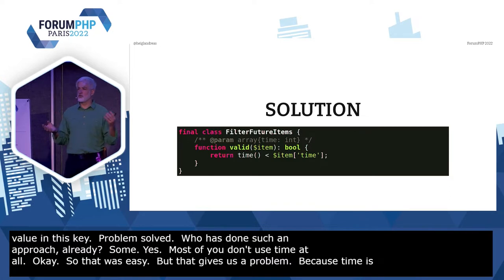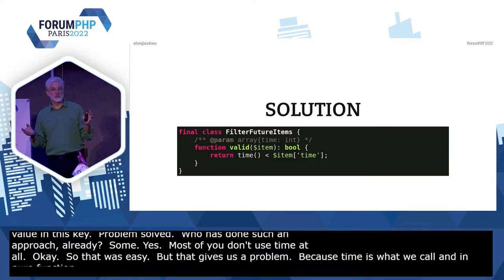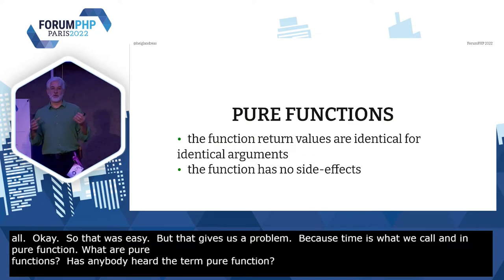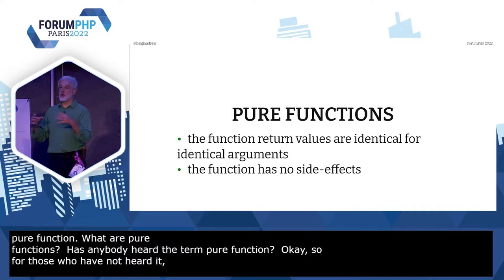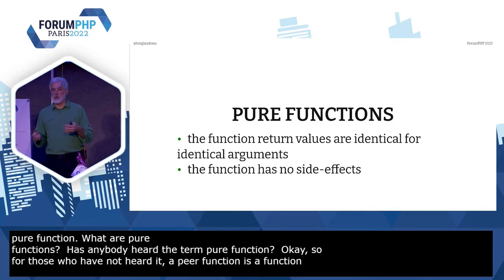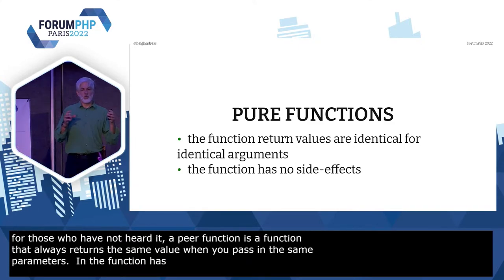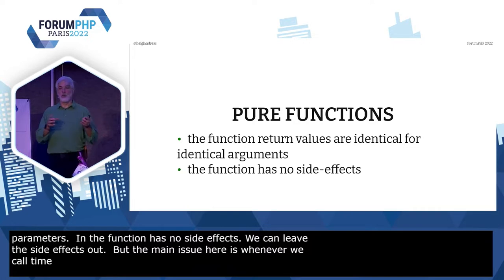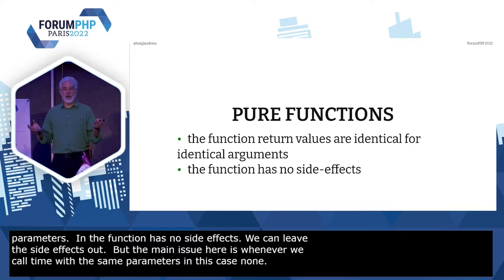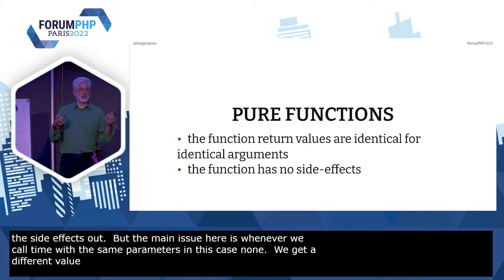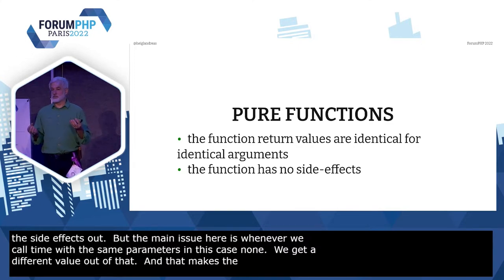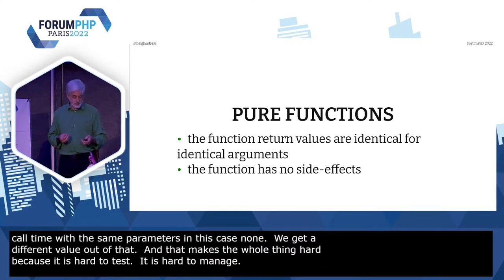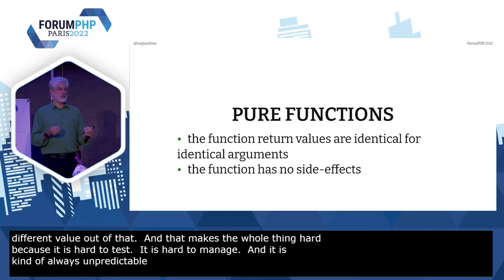Because `time()` is what we call an impure function. What are pure functions? A pure function is a function that always returns the same value when you pass in the same parameters, and the function has no side effects. The main issue here is whenever we call `time()` with the same parameters — in this case, none — we get a different value out of that. And that makes the whole thing hard, because it's hard to test, hard to manage, and always unpredictable.